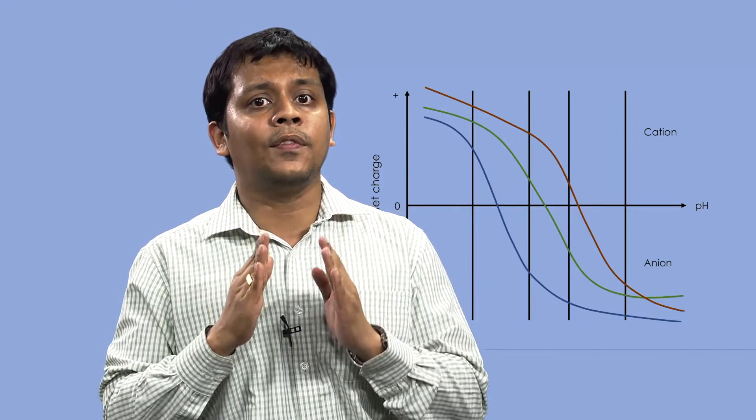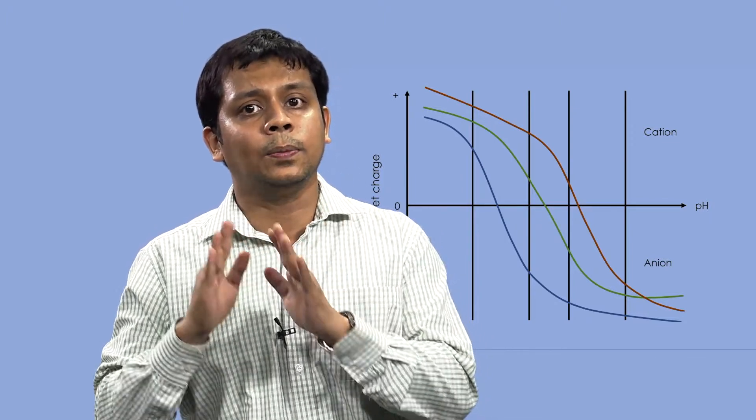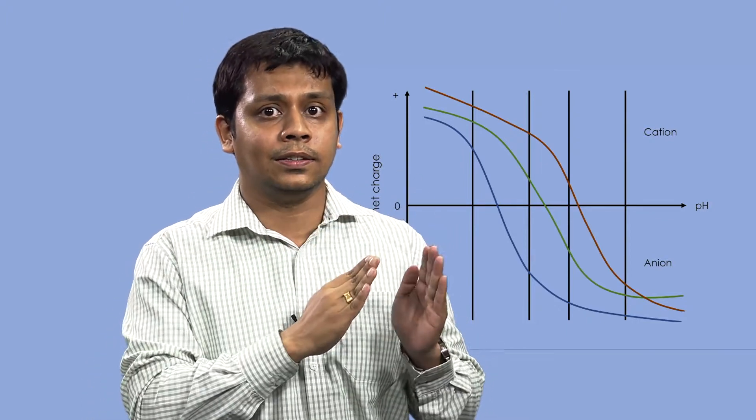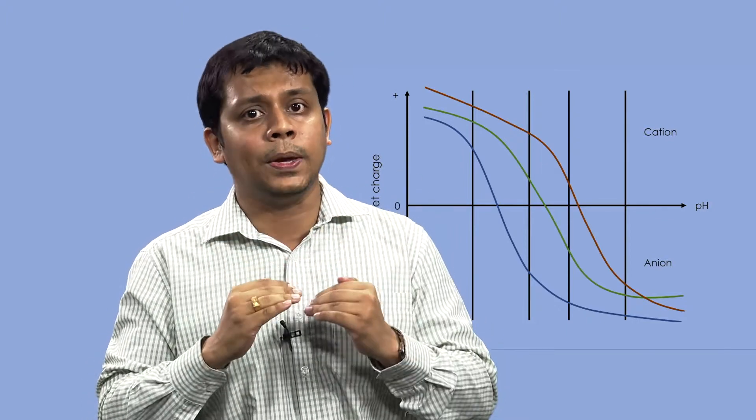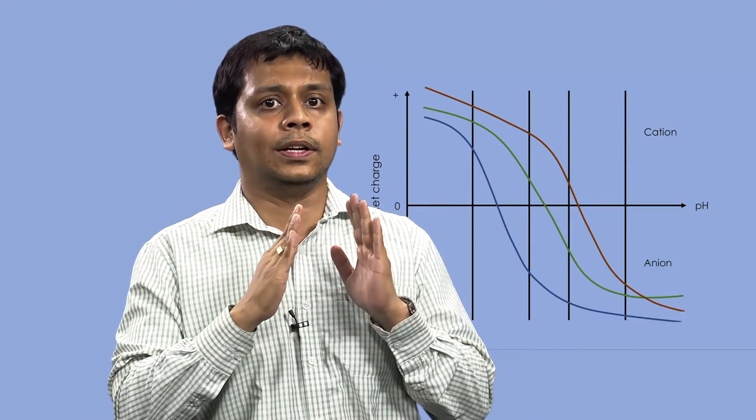However, at a pH above its pI, a protein will bind to a positively charged medium or anion exchanger, and at a pH below its pI, a protein will bind to a negatively charged medium or cation exchanger.